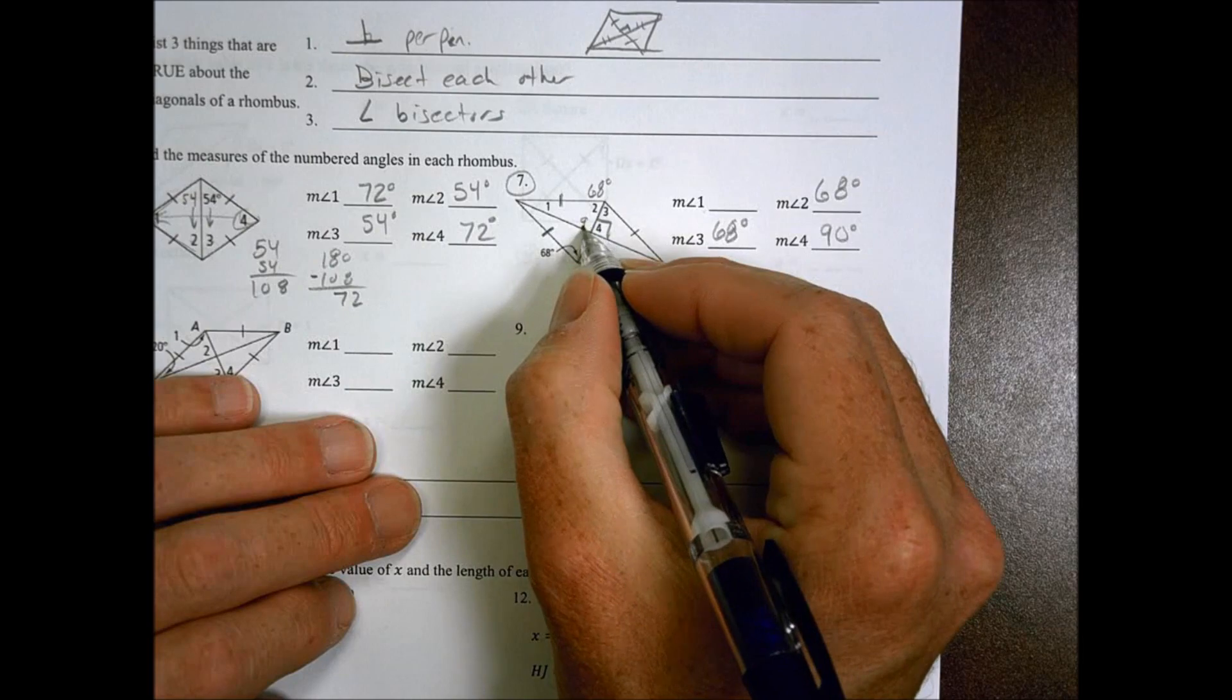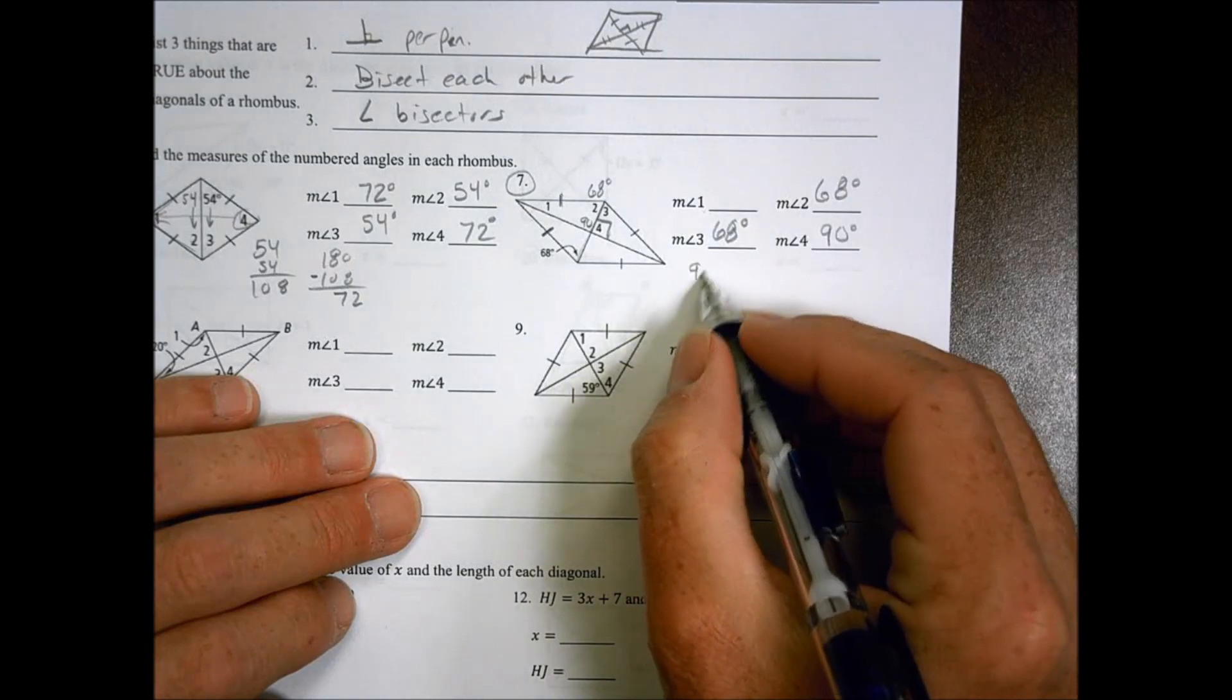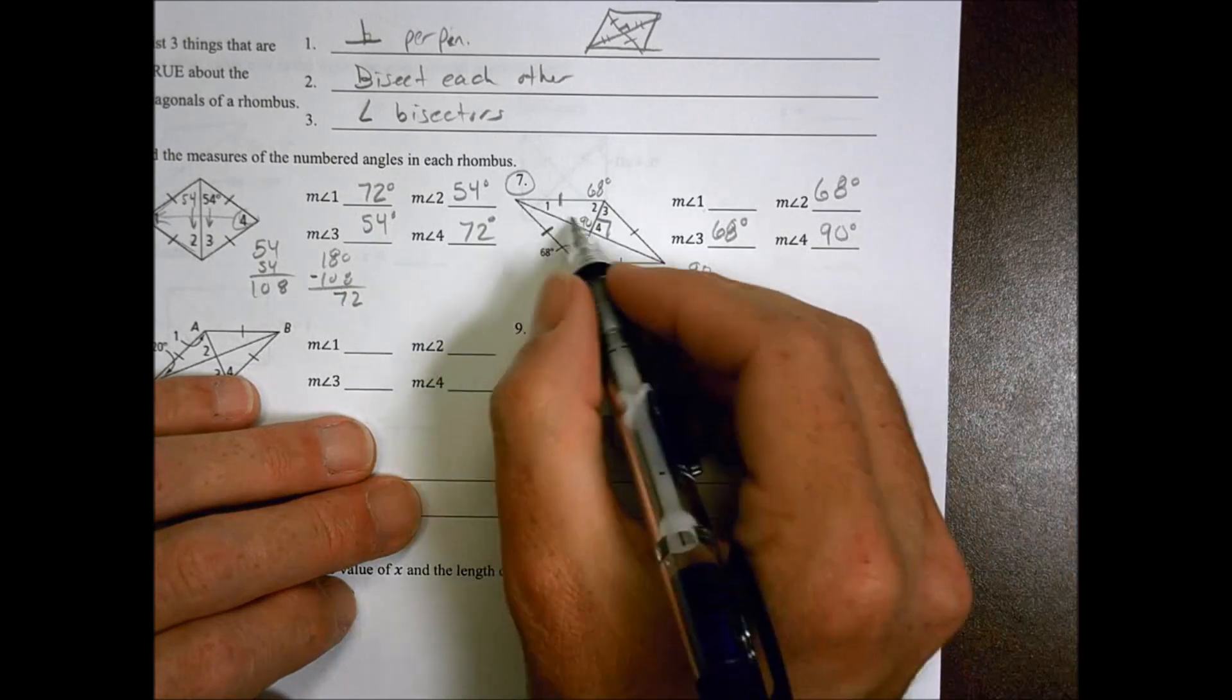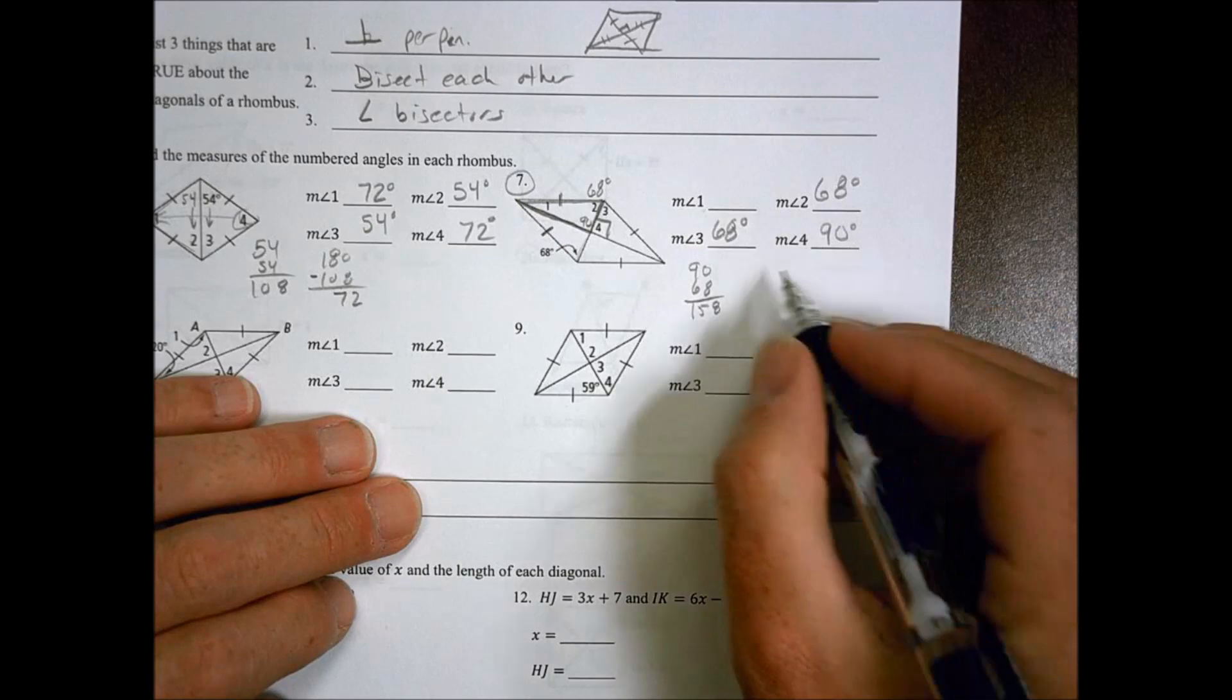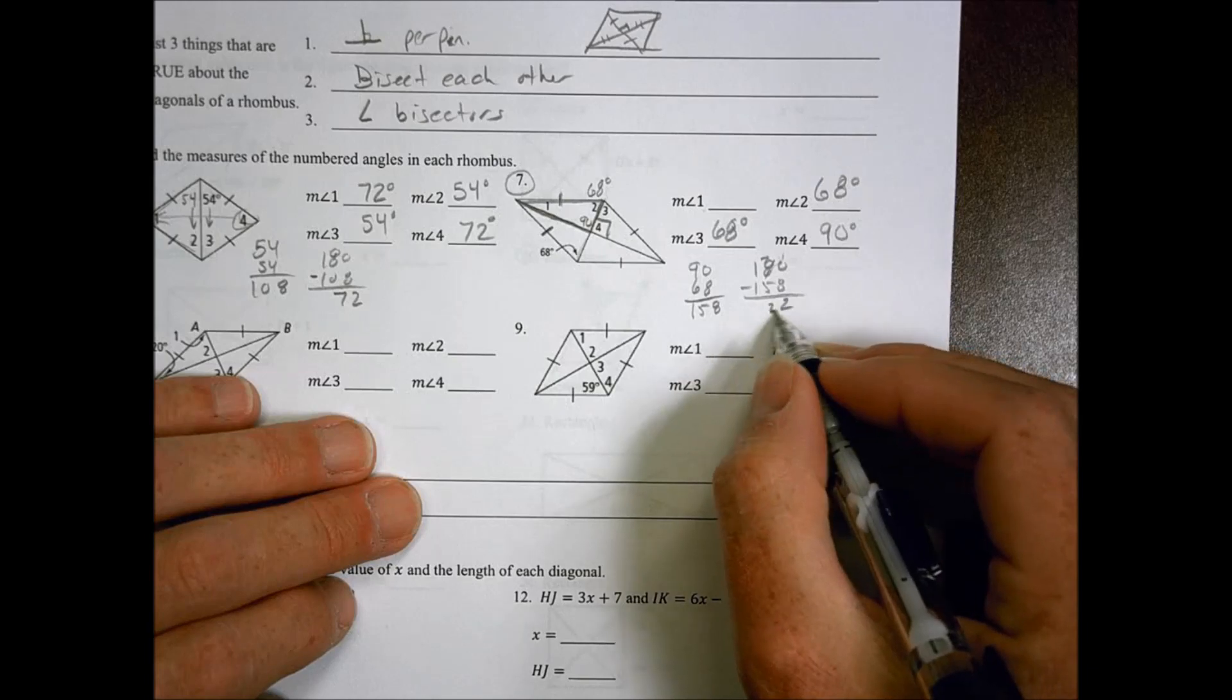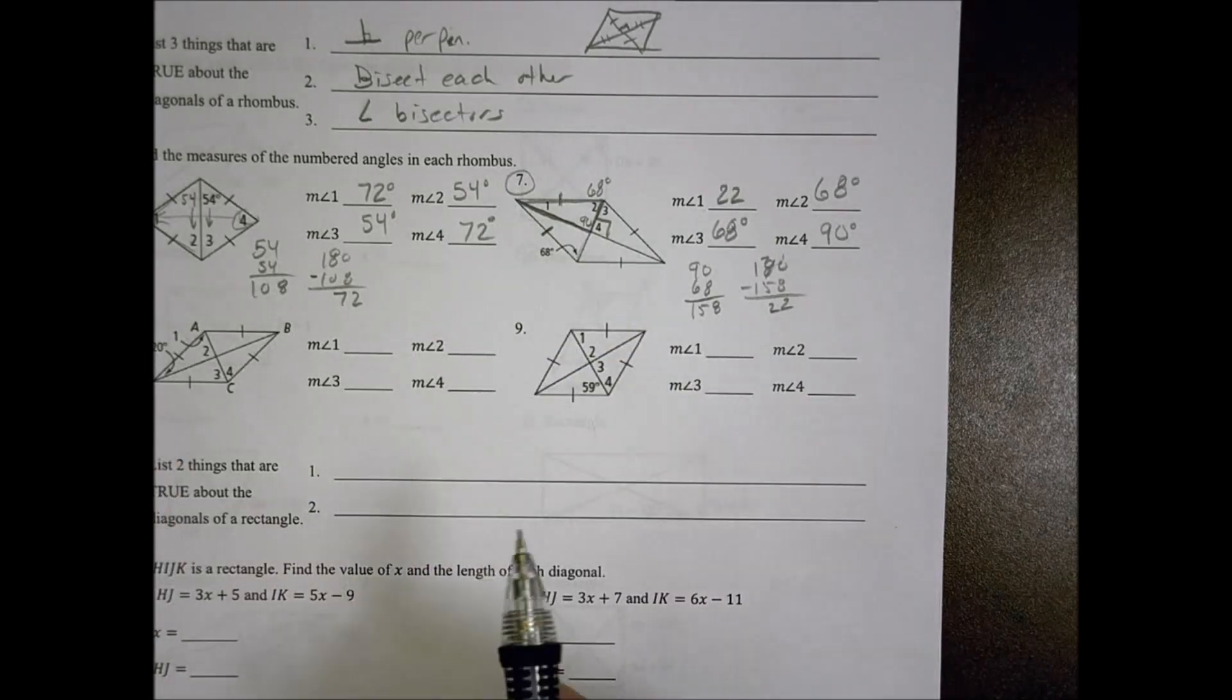Which makes this one 90 degrees as well because it's perpendicular. So I could look at it a couple ways. I have a 90 and a 68 for a total of 158 inside of this triangle right here, 158. And what's left is 180 minus 158, which is going to be 22 degrees left for the measurement of angle 1. There are several ways to get there, but that's just one way of doing it.